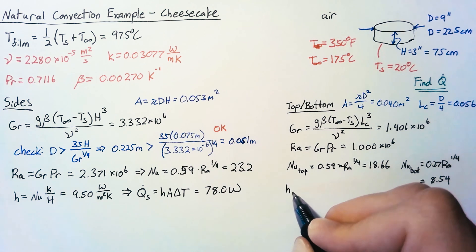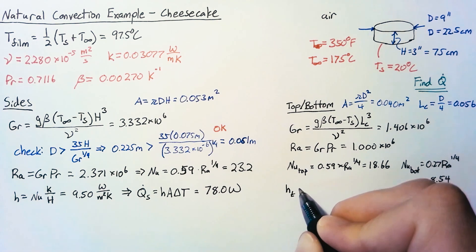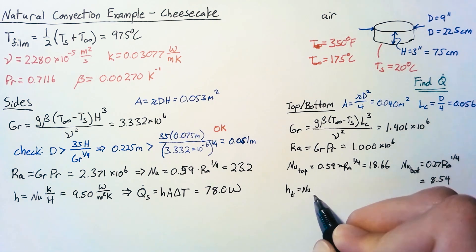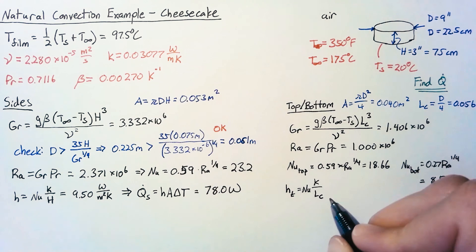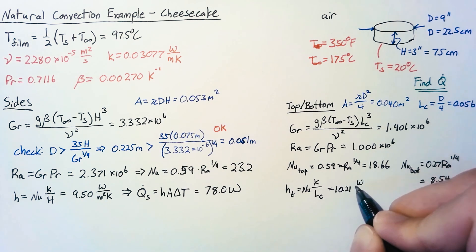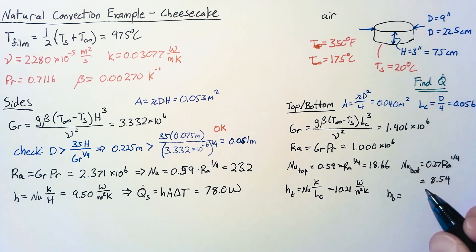So we can get our heat transfer coefficient which is just the Nusselt number multiplied by k divided by our characteristic length and for the top this is 10.21 watts per meter squared kelvin and for the bottom it is 4.67 watts per meter squared kelvin.